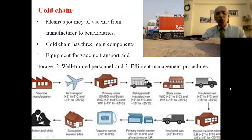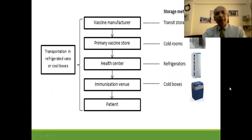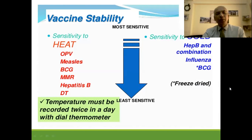Cold chain means the journey of a vaccine from the manufacturer to the beneficiaries. It has three components: equipment used for vaccine transport and storage, well-trained personnel involved, and efficient management procedures. Vaccines travel by air at 2 to 6 degrees centigrade or minus 15 to minus 25 degrees centigrade, then to primary storage, then via refrigerator van to the health center and patient. Certain vaccines are heat-sensitive — OPV, measles, BCG, MMR, Hepatitis B, and DT. Certain vaccines are cold-sensitive — Hepatitis B, influenza, and BCG.